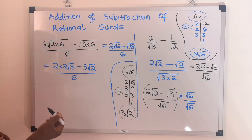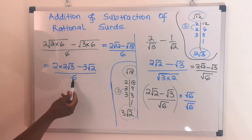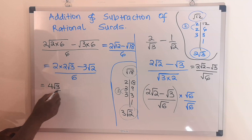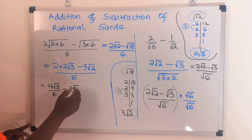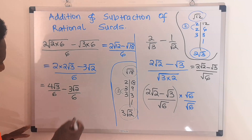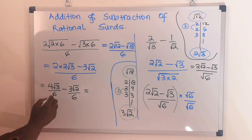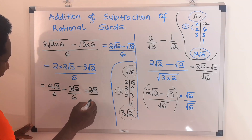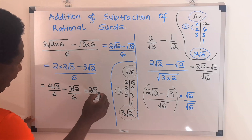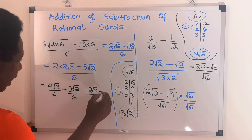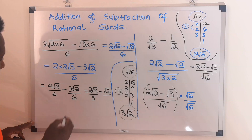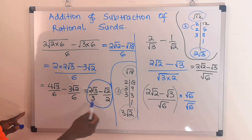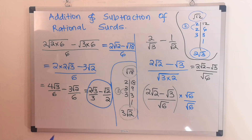Separating the terms, we have 2 times 2 root 3 divided by 6, minus 3 root 2 divided by 6. That gives us 4 root 3 divided by 6 minus 3 root 2 divided by 6. Simplifying: 4 divided by 6 reduces to 2 over 3, giving 2 root 3 over 3. Then 3 divided by 6 reduces to 1 over 2, giving root 2 over 2. And this becomes our answer — we have no square root in the denominator and this is stable.